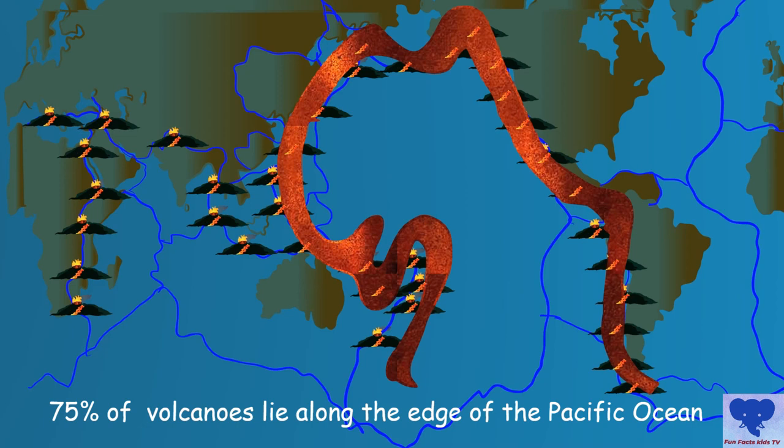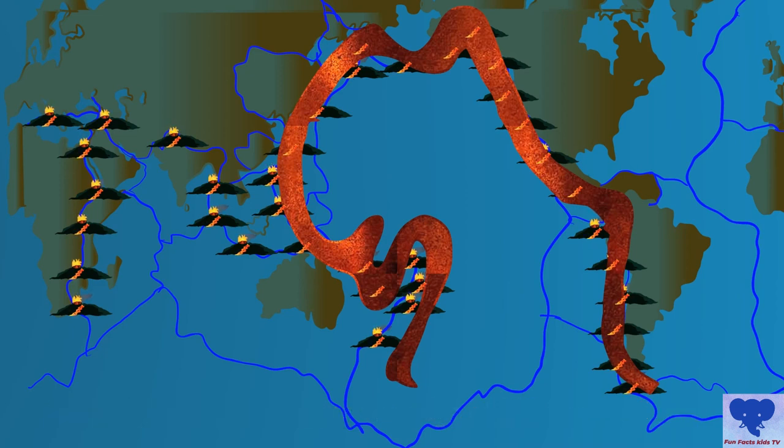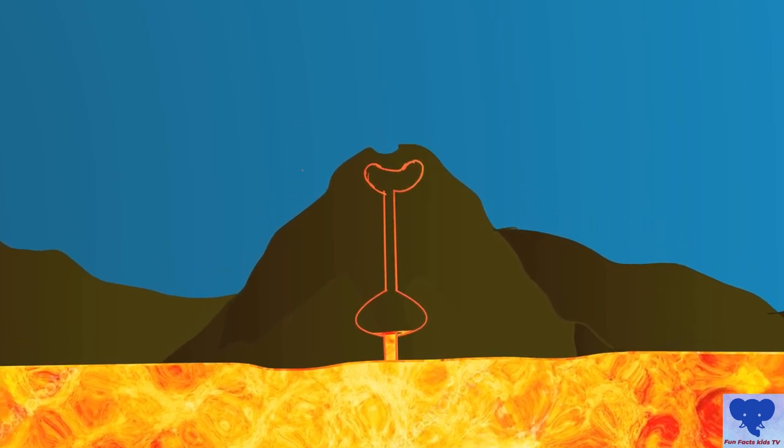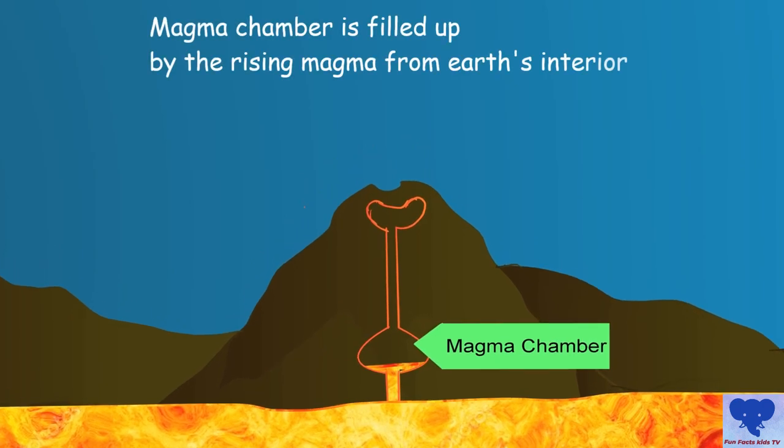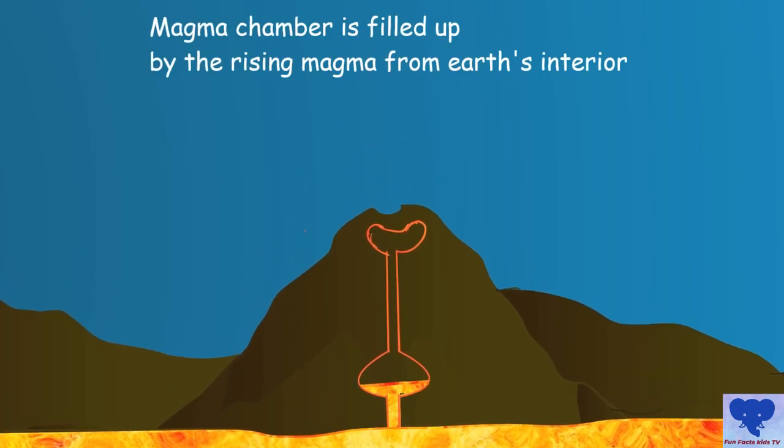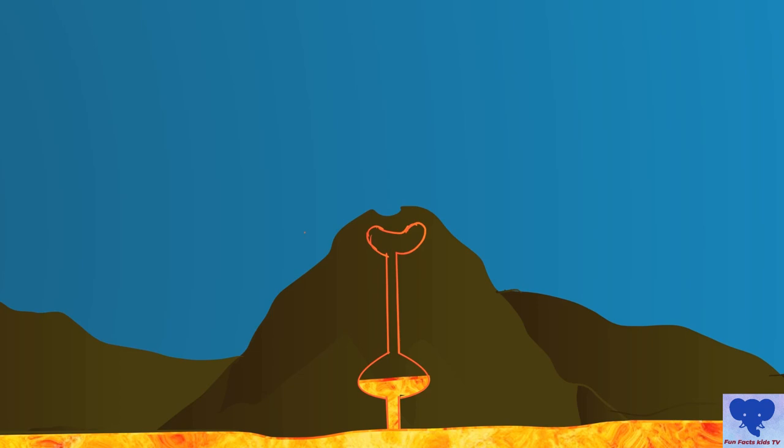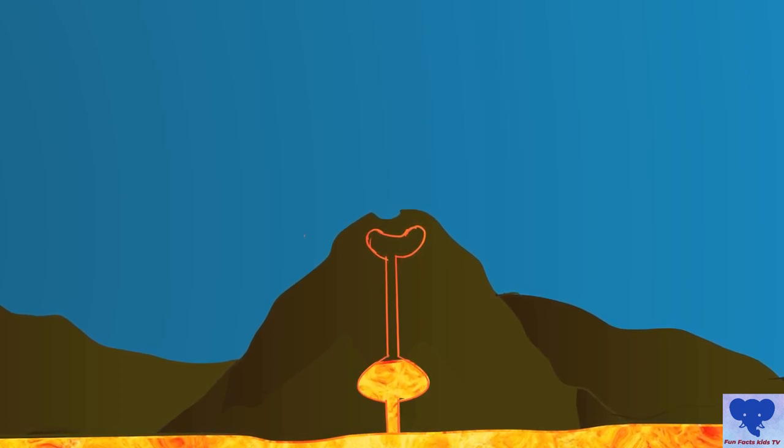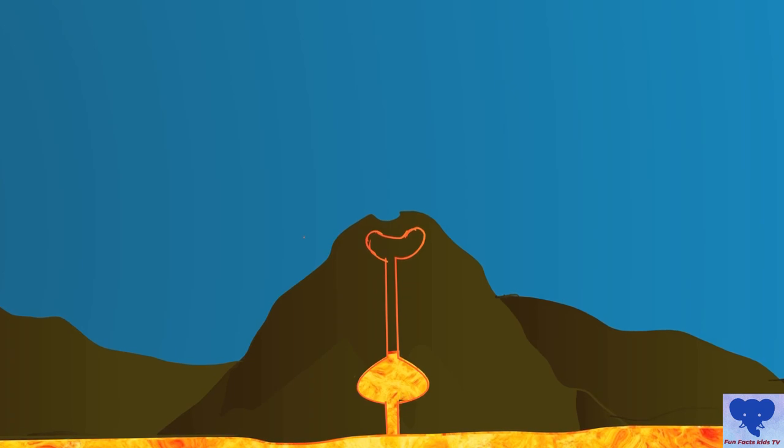Deep under the volcano, there's a vast chamber called the magma chamber which slowly starts to fill with magma from the interior of the earth. This hot magma moves up to the top of the volcano from the chimney or vent inside the volcano.